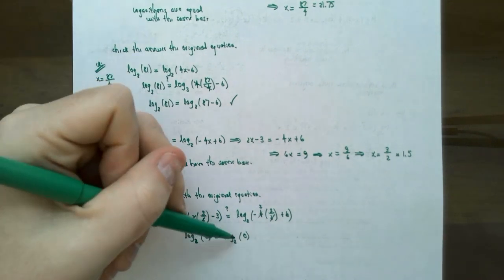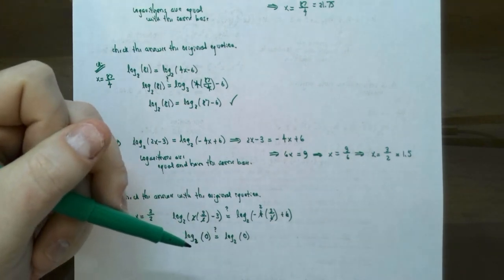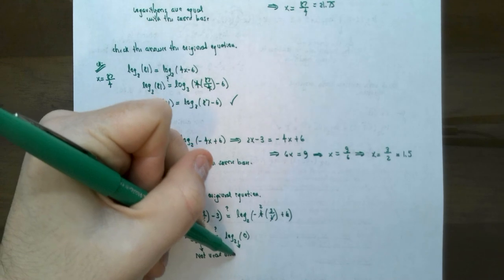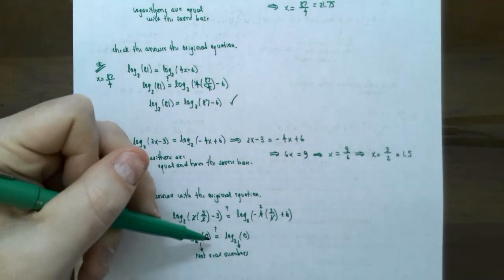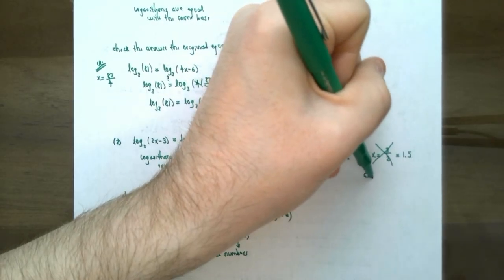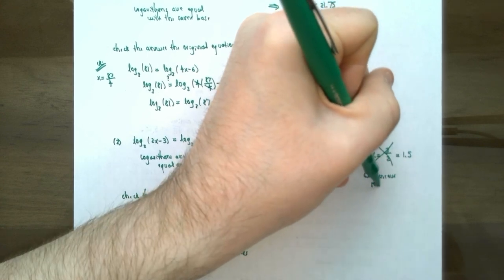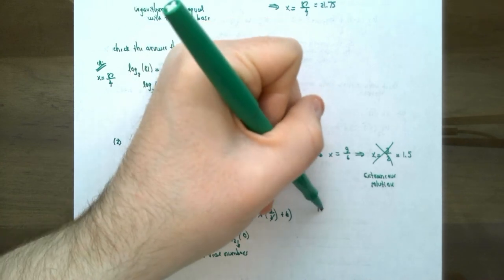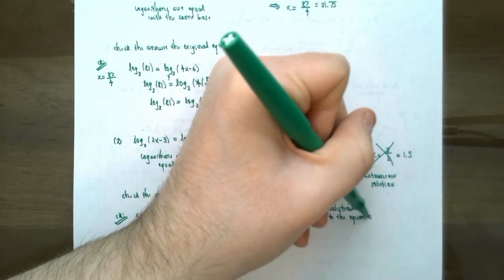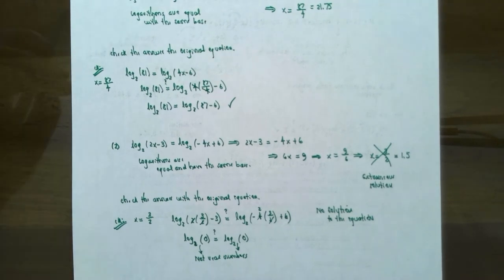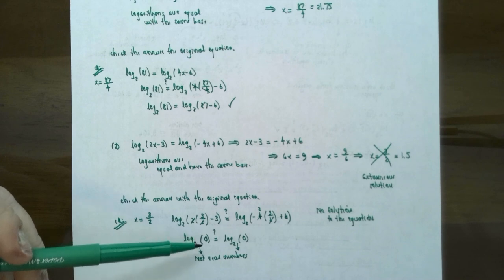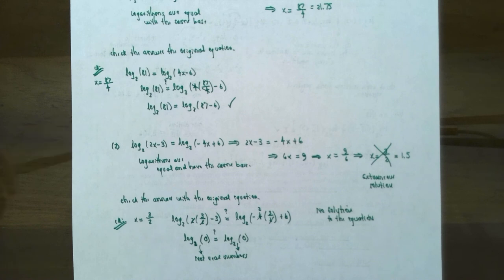So you get the same expression on both sides, but are they equal? Does the original answer check? No — because log base 2 of 0 is not a real number. If they don't even exist, how can they equal each other? So x equals 3 halves is not the solution — this is called an extraneous solution. This equation has no solution. That's why you must check your answers with logarithmic equations. Sometimes when you substitute the value of x, it gives you a logarithm of 0 or a negative number, which are not real numbers and cannot equal other real numbers.